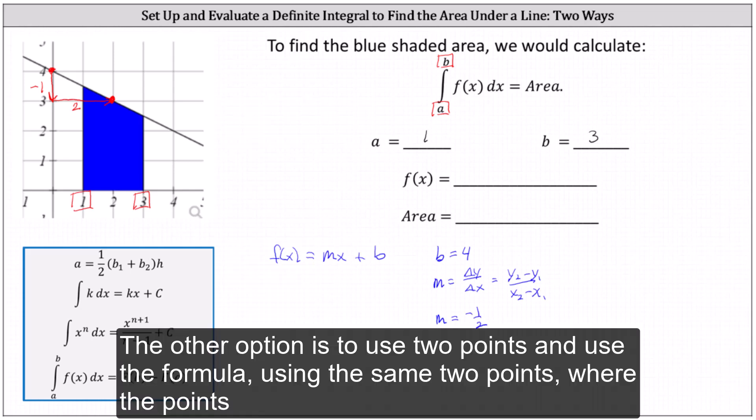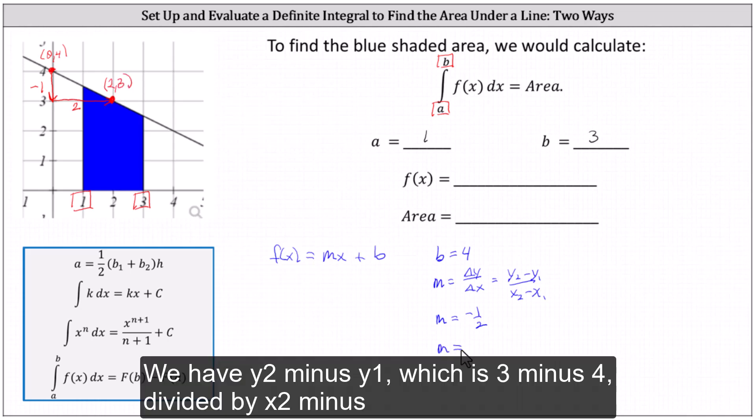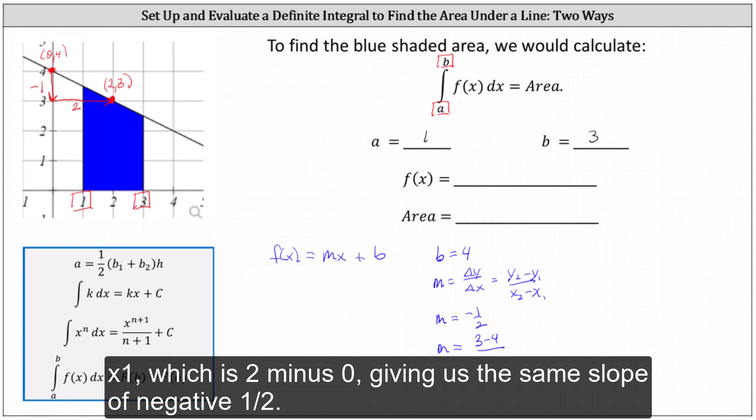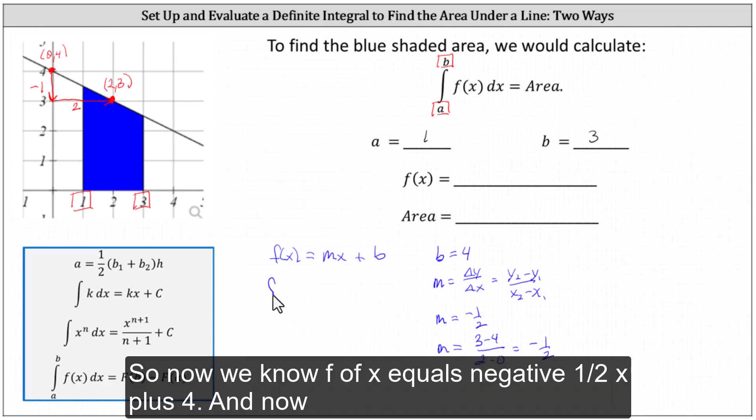The other option is to use two points and use the formula, using the same two points, where the points are zero comma four and two comma three. We have y2 minus y1, which is three minus four, divided by x2 minus x1, which is two minus zero, giving us the same slope of negative one-half. So now we know f(x) equals negative one-half x plus four.